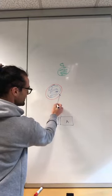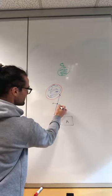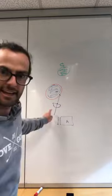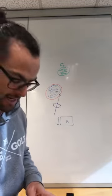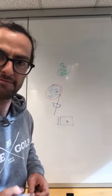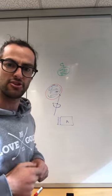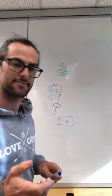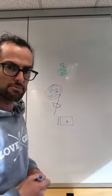I'll choose right there, and then I have within that one club length from that reference point the ability to drop my ball. Okay, so that was option B.